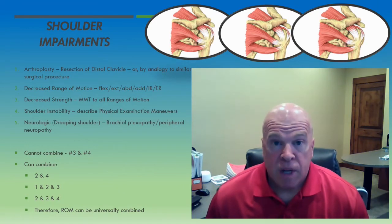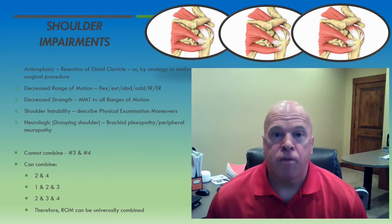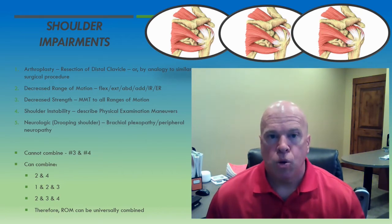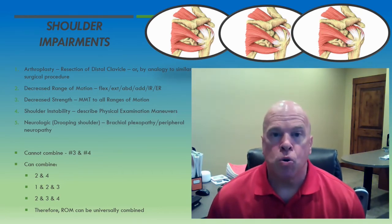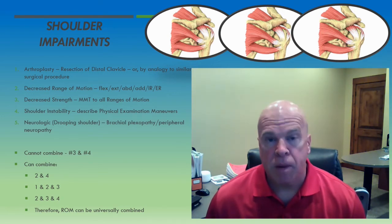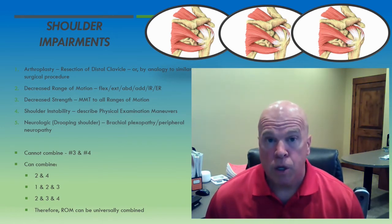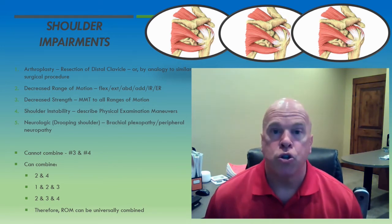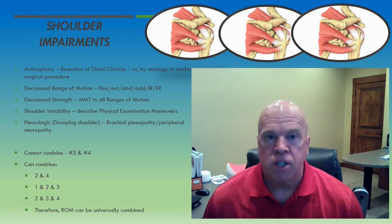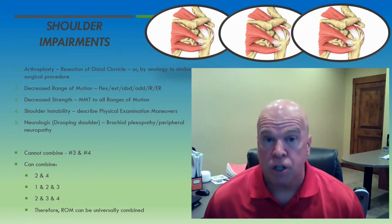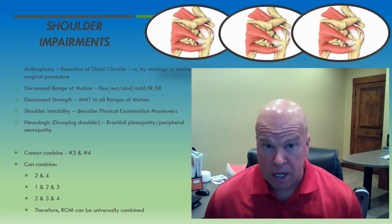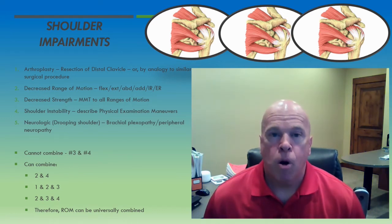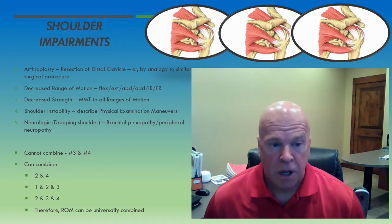When you have an examinee who has shoulder pain, has suffered an industrial shoulder injury, gone through conservative and/or surgical treatment, and comes to you at the permanent and stationary evaluation — what permanent impairment options do you have available to accurately rate this examinee for their loss of function of the shoulder joint? By review of chapter 16, there are a small population of physical examination findings for which the examinee will qualify for a permanent impairment rating.